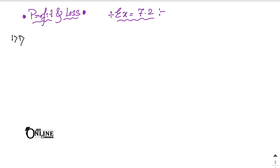Problem number one: find the profit or loss percentage when CP (cost price) equals 400 and SP (selling price) equals 468. Since selling price is greater than cost price, there will definitely be profit. Always remember: for profit, selling price is always greater than cost price.